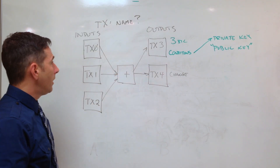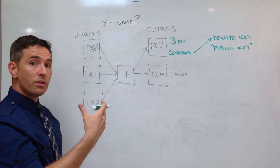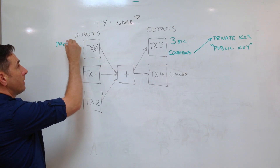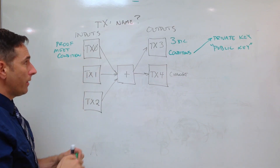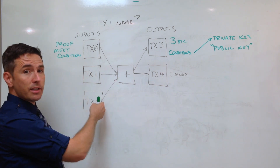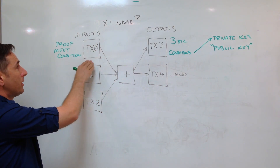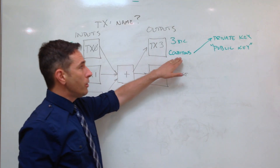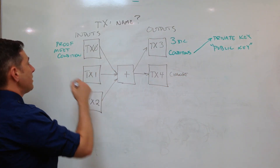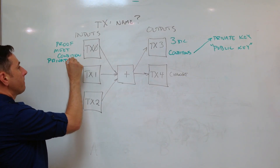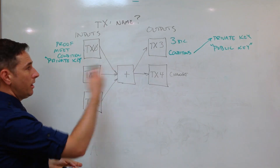Likewise on the input side: when you specify that you're going to use something as an input, you must provide proof that you meet the conditions specified in that prior output. Because outputs from one transaction become inputs to the next, when I place conditions on an output I must validate that I've met those conditions on the input to my transaction. So if the previous output says 'you must have the private key matching this public key,' then you need to prove you have that private key in order to move those bitcoins in your transaction.